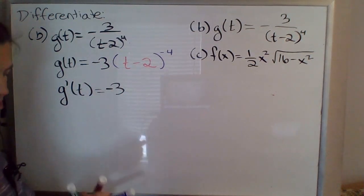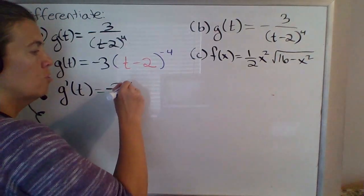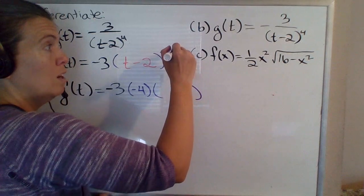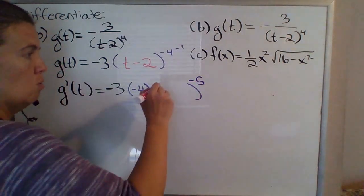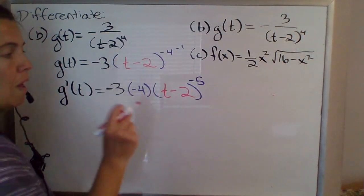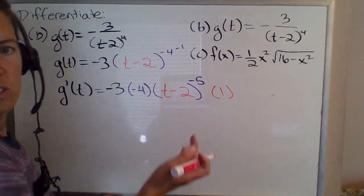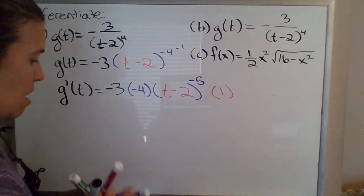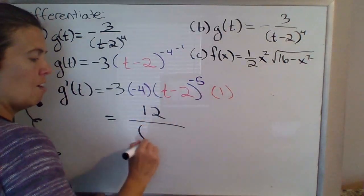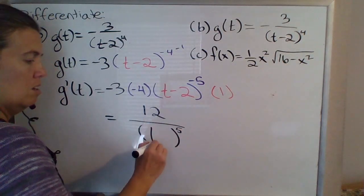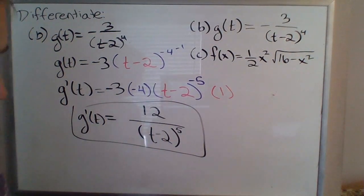The negative 3 is just a constant coefficient that just sits there. You take the derivative of the outside first — the outermost layer is this negative 4 power. So bring the negative 4 down, leave the inside alone, subtract 1 from the exponent. Negative 4 minus 1 gives us negative 5. Leave the inside alone: t minus 2. Then multiply by the derivative of the inside. Derivative of t minus 2 is just 1. Cleaning up: negative 3 times negative 4 is positive 12, and moving the negative 5 power to the denominator gives us 12 over (t minus 2) to the 5th.